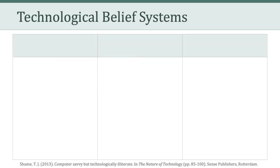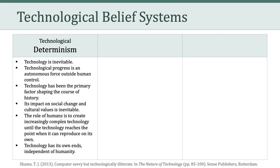I want to go over some of the technological belief systems that Shum touched upon in the "computer savvy, but technologically illiterate" article we read last week. The first of those belief systems is technological determinism — the idea that technology is inevitable. Technological progress is an autonomous force outside of human control, and technological determinism sees technology as the primary factor shaping the course of history. Its impact on social change and cultural values is inevitable. The role of humans is merely to create increasingly complex technology until the technology can actually reproduce on its own. In other words, technology has its own ends independent of humanity.